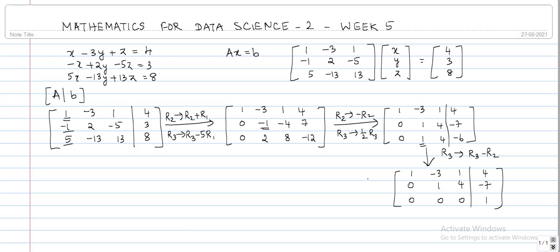So now this is our reduced system. The system that we have is x minus 3y plus z equals 4, and then y plus 4z equals minus 7. And in the last row what we have is 0 equals 1.